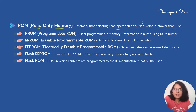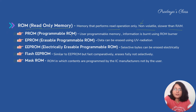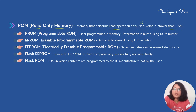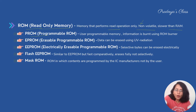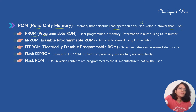Since ROM is read-only, we cannot write data into it, but at the time of manufacturing we need to write certain data. So there are variations of ROM that allow writing. The first variation is PROM — Programmable ROM. PROM is a user-programmable memory and we can burn information into it using a special arrangement called a ROM burner.